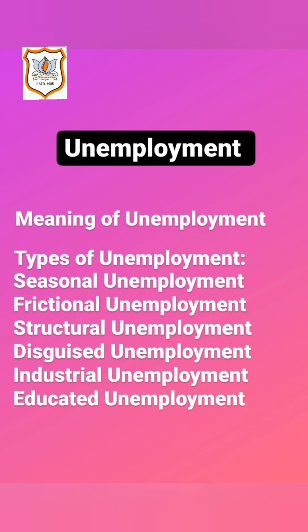The next type is frictional unemployment, which occurs due to the changeover of production technology or machinery, rendering workers jobless for some time. This is not a permanent situation — it can occur only temporarily. The next type is structural unemployment, which takes place due to the orthodox or old nature of Indian society, illiteracy, and the sway of age-old customs and traditions.